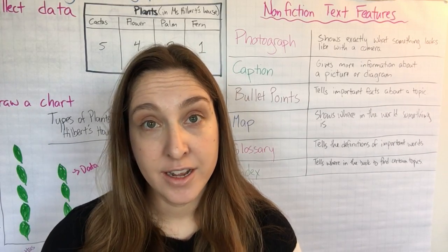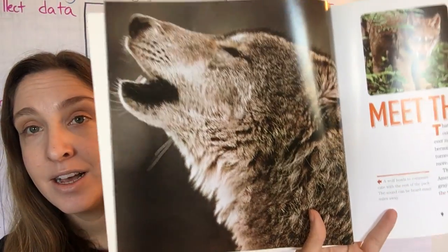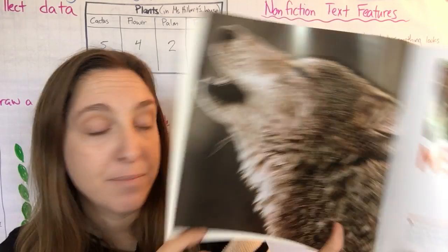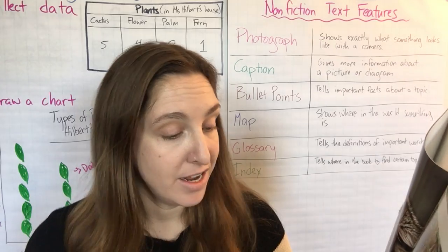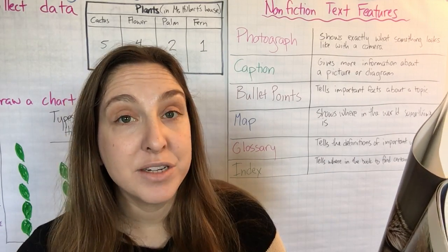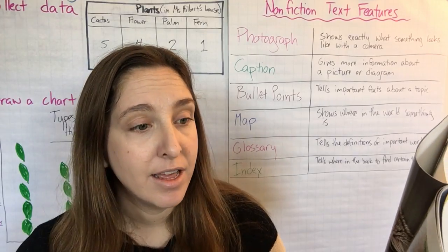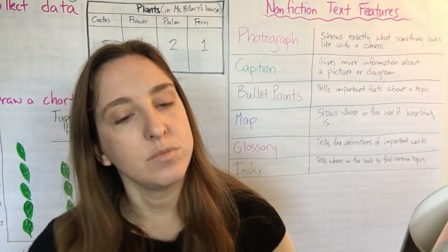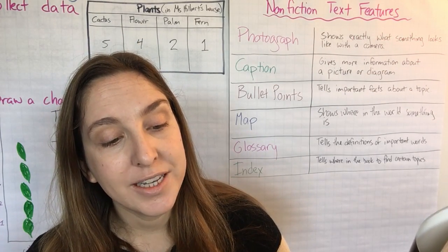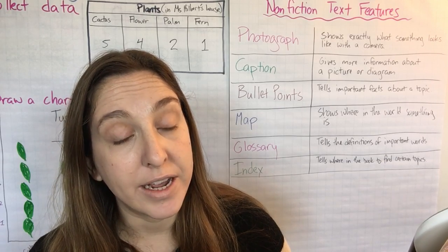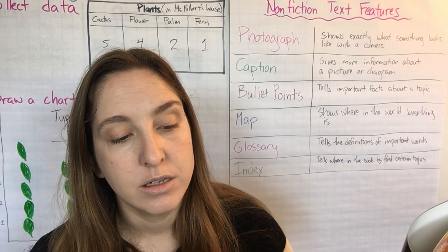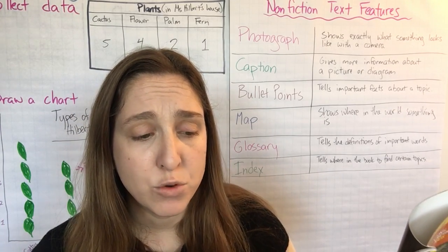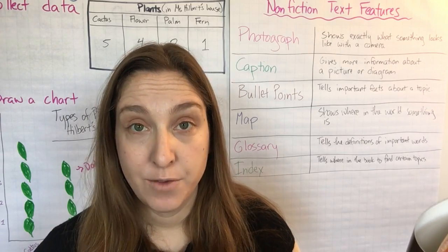There are two pictures on this page, so I'll look at the pictures and then read the captions. This photograph looks like the wolf is maybe howling. The caption says: a wolf howls to communicate with the rest of the pack. The sound can be heard many miles away. That's really interesting. The second picture looks like a baby wolf. The caption says: a young wolf pup explores his surroundings after his mother moved the pups to a new area out in the open. That makes me wonder — why did the mother have to move the pups to a new area? Let's keep reading and see if we can find the answer.